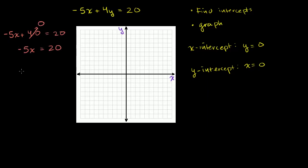We can divide both sides of this equation by negative 5. The negative 5's cancel out. That was the whole point behind dividing by negative 5. And we get x is equal to 20 divided by negative 5 is negative 4. So when y is equal to 0, we saw that right there, x is equal to negative 4.